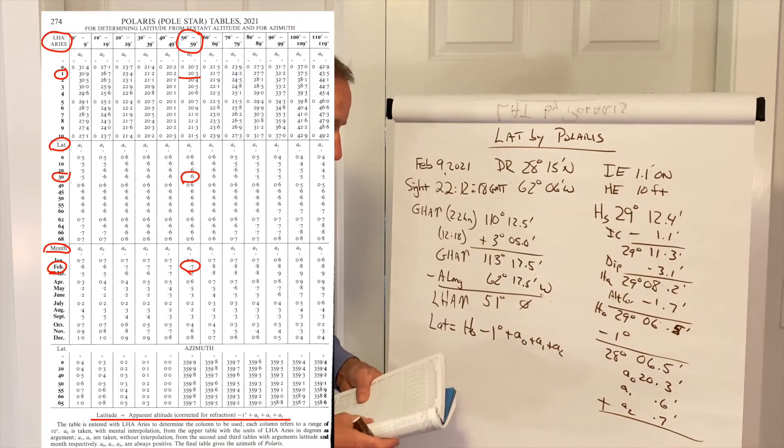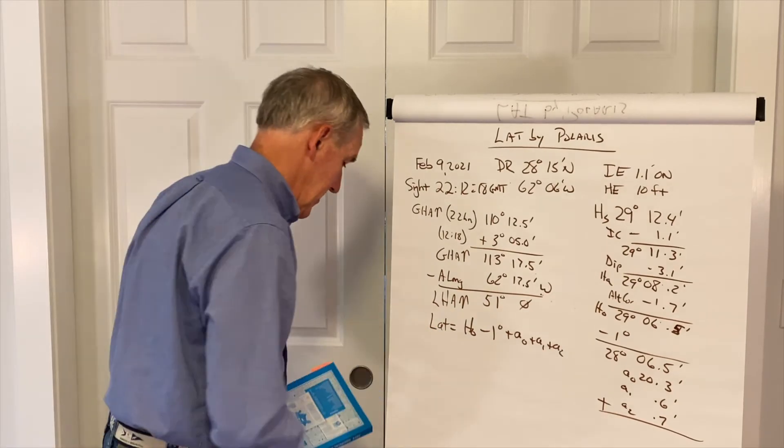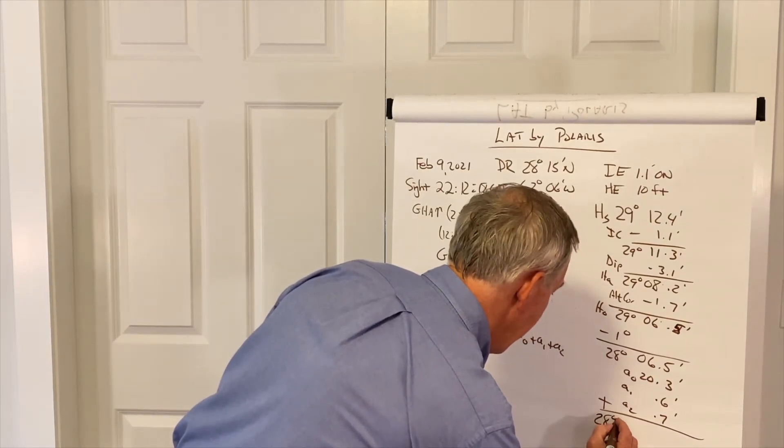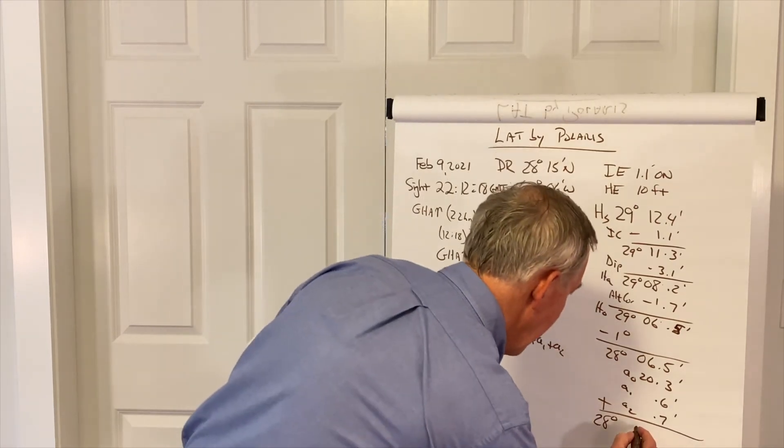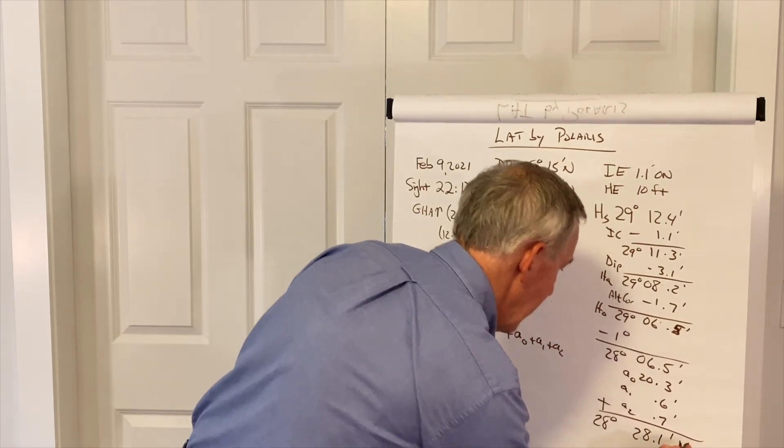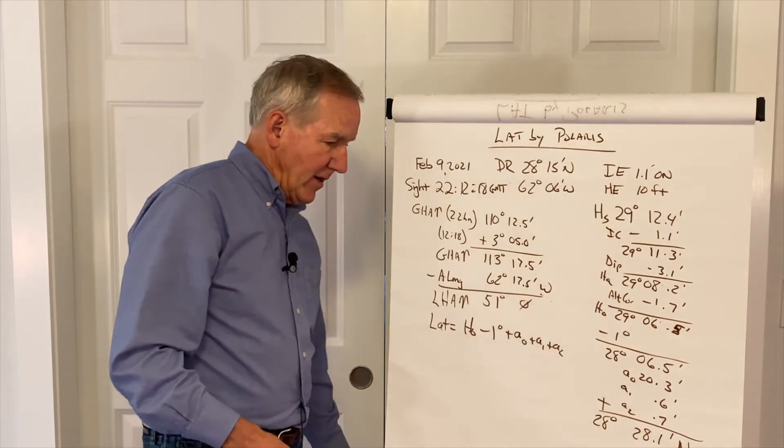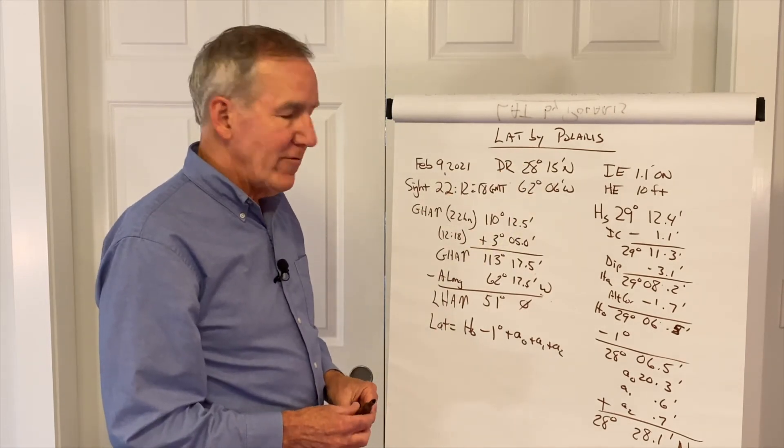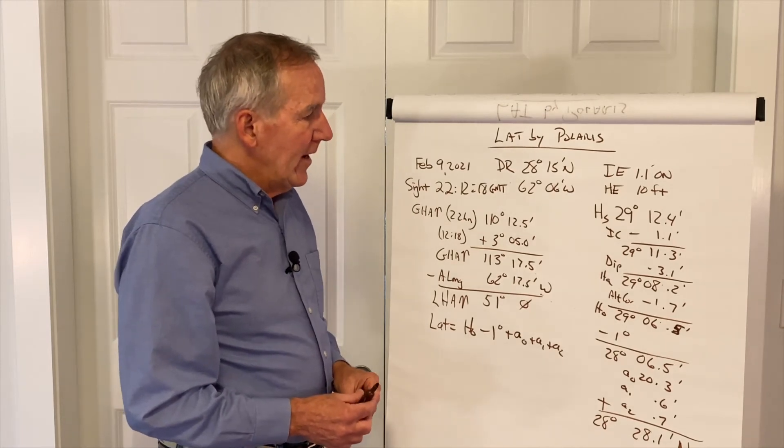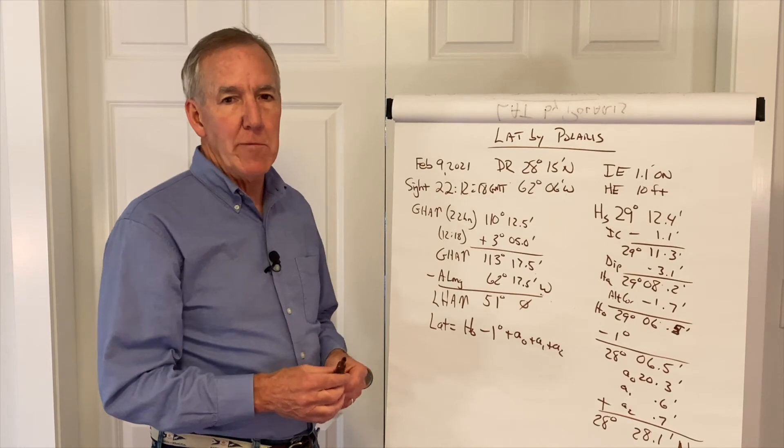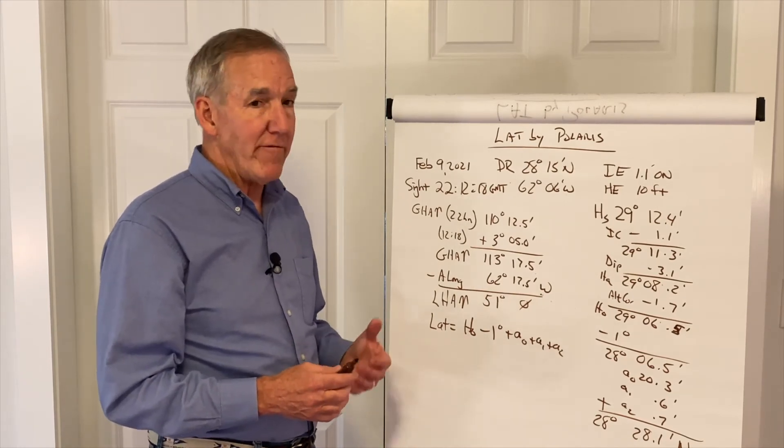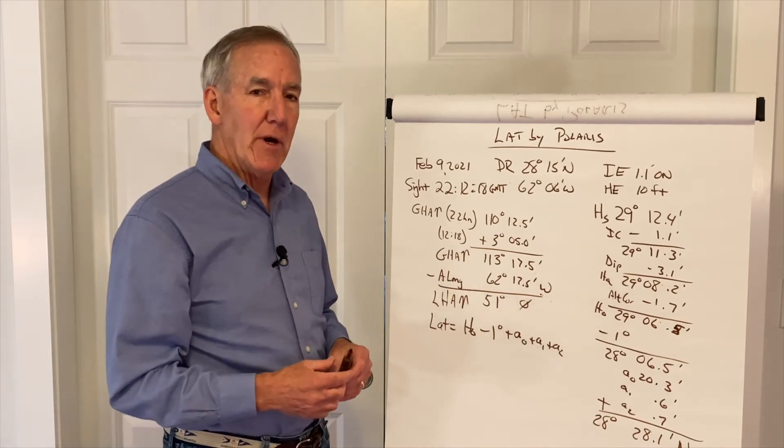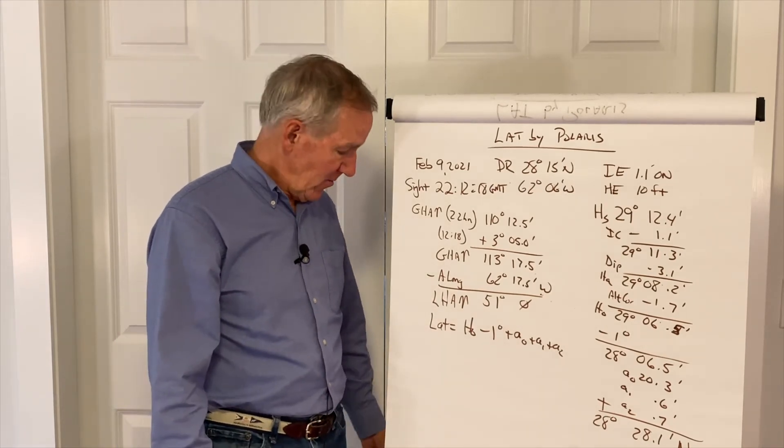And these are all added, and when we add those all up, we end up with a latitude of 28 degrees, 28.1 minutes north. And we can compare that to our dead reckoning latitude, so we're pretty close. We're 10, 12 miles, that's not bad. And you can plot that just as a straight line of latitude and label it as Polaris, and you can advance it like any other site. You can combine it with other stars and the moon if you've got a multi-body site going on.